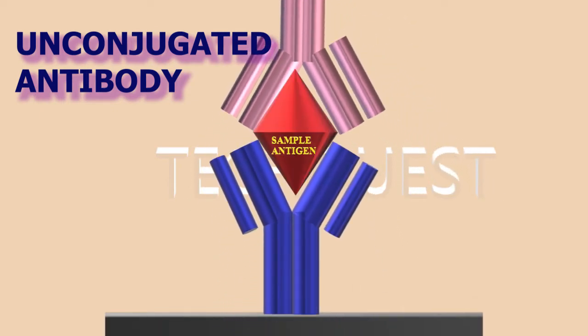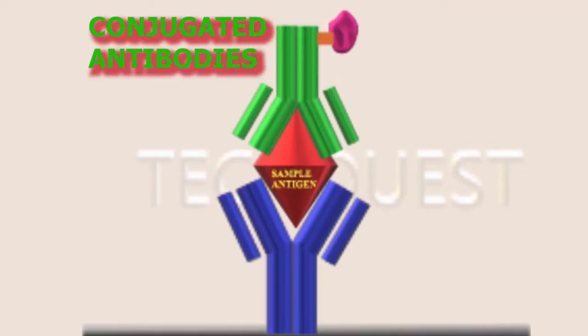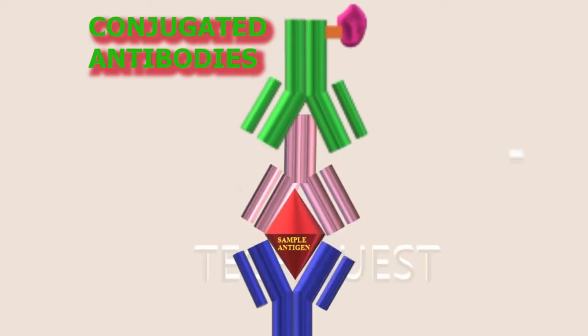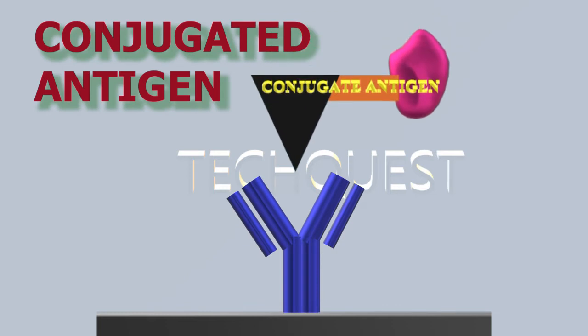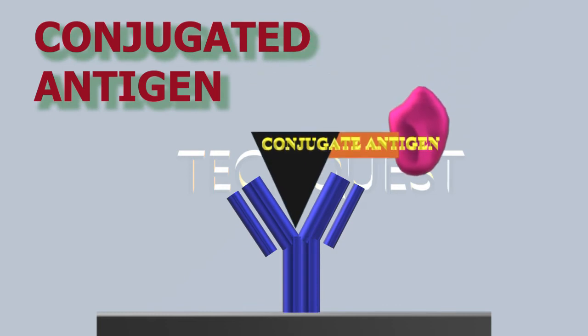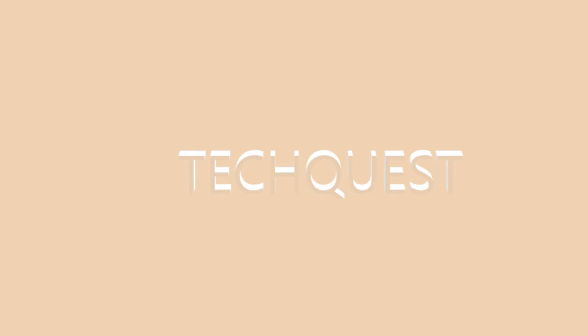Unconjugated detection antibodies are attached to the immobilized antigen-antibody complex and are specific to the antigen, binding at the epitope to form an antibody-antigen-antibody complex. Conjugated antibodies are enzyme-attached antibodies. In sandwich ELISA, conjugated antibodies attach to the detection antibodies. In competitive ELISA, conjugated antigens having a similar epitope as the sample can attach to the immobilized antibodies.